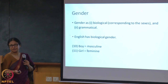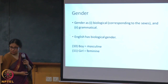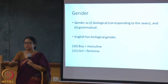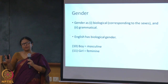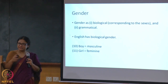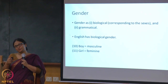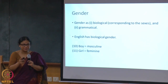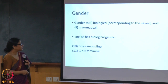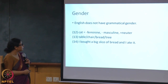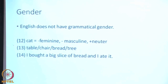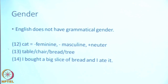English has biological gender — if you have a boy, he is masculine, reflected in the third person singular pronominal system. English is what we call inflectionally a poor language — you don't have much inflection. When you move on to something like cat, table, or chair, English does not have grammatical gender. So cat will be minus feminine, minus masculine — plus neuter — meaning none of those features exist. You can say 'I bought a big fat slice of bread and I ate it,' using the neuter pronominal, not 'I ate him.'